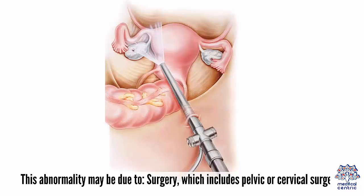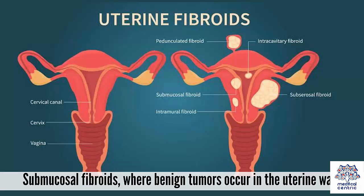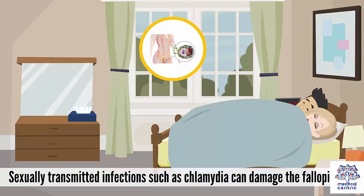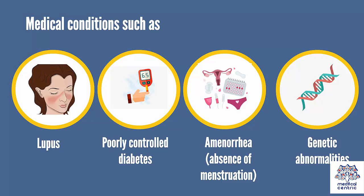These abnormalities may be due to surgery, including pelvic or cervical surgery; endometriosis, a condition where endometrial tissue lining the uterus grows outside of the uterus; submucosal fibroids, where benign tumors occur in the uterine wall; or sexually transmitted infections such as chlamydia, which can damage the fallopian tube. Medical conditions such as lupus, poorly controlled diabetes, amenorrhea (absence of menstruation), and genetic abnormalities are also causes.